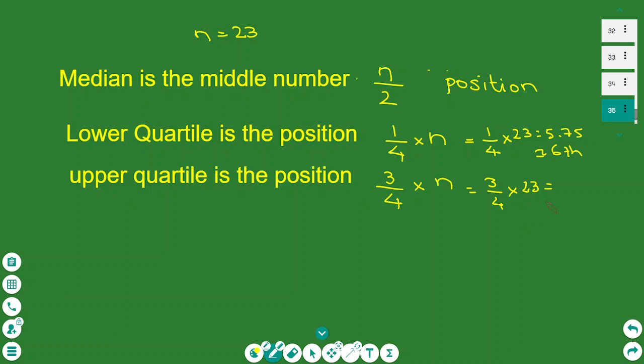So I do three quarters of 23 is the position. Remember, this is a position of the number on the list that I want to find, not the number. So it is the 17th number. It is 17.25. I round down to the 17th.